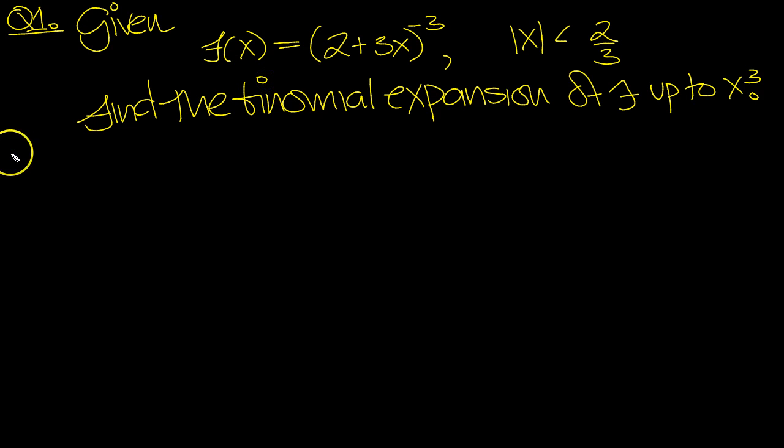So let's have a look at this. Here, f(x) equals... no, wait. What should we do here? We'll take the 2 out, 2 to the minus 3. I'm going to take that outside a bracket, and it's going to be 2^(-3) times (1 + 3x/2)^(-3).